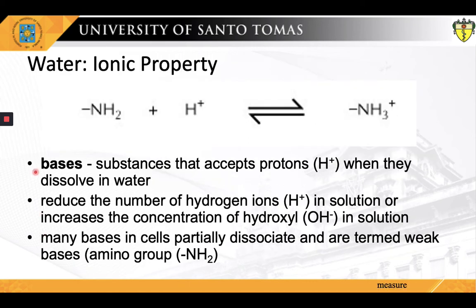On the other hand, the opposite of an acid is a base. Just as the defining property of an acid is that it donates protons to a water molecule to raise the concentration of H3O+ ions, the defining property of a base is that it raises the concentration of hydroxyl ions or OH- ions, which are formed by removal of a proton from a water molecule. Thus, sodium hydroxide or NaOH is basic or alkaline because it dissociates in aqueous solution to form sodium cations and hydroxyl ions. In the same vein, most bases in biological systems only partially dissociate and are thus termed weak bases.